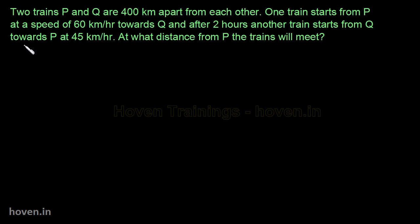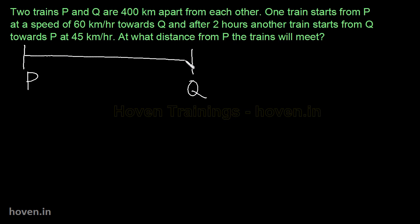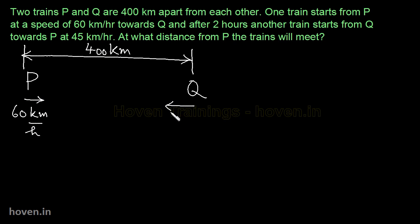ऐसे questions के लिए सबसे पहले एक diagram बना लेना ज्यादा helpful रहता है। यह P और Q आप दो points बना लें और इनके बीच का distance है 400 km। एक train इधर से चल रही है 60 km per hour पे और एक train इधर से चल रही है 45 km per hour पे।